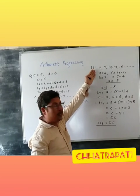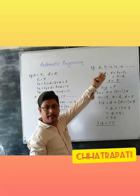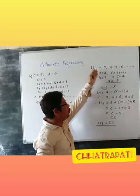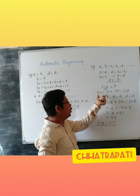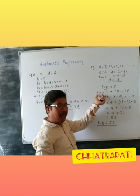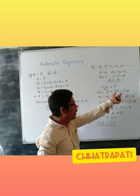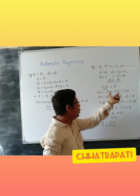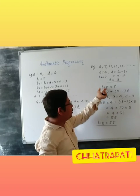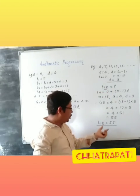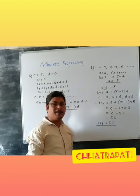Our sequence was 4, 7, 10, 13, 16, and we were given only 5 terms. By using the formula TN = A + (N − 1) × D, we can calculate any number of terms, as we calculated the 18th term here. Thank you.